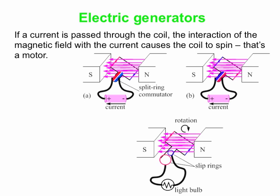And the deal with the split ring commutator is that every half rotation of the loop, as far as the loop is concerned, the current through the loop reverses direction. And the point of that is to keep the torque going the same direction on the loop, so you always get a spin in a particular direction.